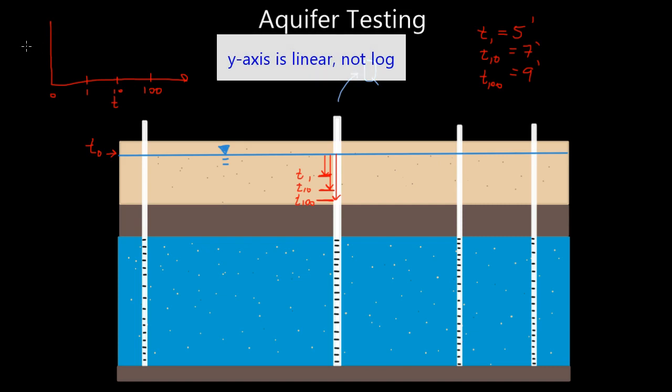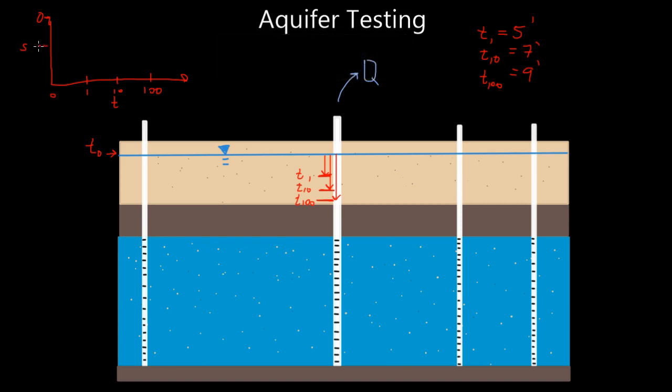And our y-axis, we'll have drawdown. So we'll have zero feet of drawdown there. We'll have five feet of drawdown there. And we'll do 10 right there. So we can plot these data points on this graph here. And what does that look like? At T0, we have zero drawdown. So that's that point. At T1, one minute into our test, we said we had five feet of drawdown, so that's right there. One minute, five feet of drawdown.